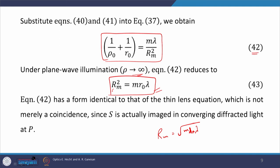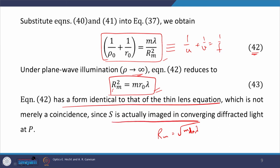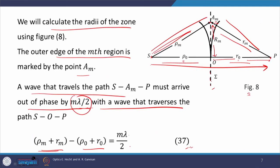Equation 42 has a form identical to that of a thin lens equation: 1/u + 1/v = 1/f. This resemblance is not a coincidence, because S is actually imaged in converging diffracted light at P. This zone plate is actually imaging point source S to the point P. Therefore, this zone plate is actually working as a lens — a lens which is transmitting at certain parts and opaque at others.